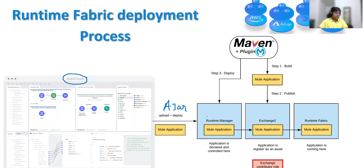Runtime Fabric actually uses the archive — which is nothing but your Exchange — to store all the JARs which are used while deploying. So before deploying to Runtime Fabric, Exchange will be used to store this JAR file. This extra step will help in Runtime Fabric for rollbacks.